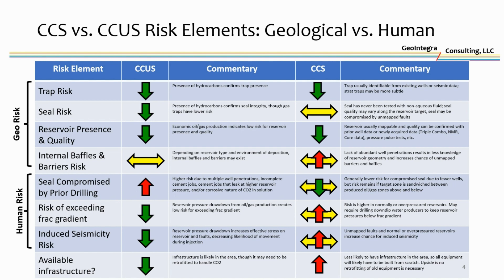I've made this chart to describe some of the main risk elements when looking at CCS versus CCUS. Starting with geo risk. There are elements that need to come together for a successful CCUS project, including trap — do you have a structure that will hold the CO2 and oil in place? The seal — what is its quality, and is it continuous over the entirety of the reservoir? Reservoir quality — are there good sandstones or limestones that are well-connected, porous, and permeable? And internal baffles and barriers — are there dead ends between sandy or limey bodies that would prevent CO2 from moving efficiently through the formation?